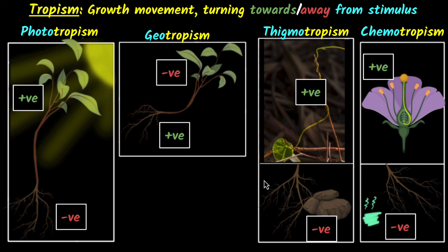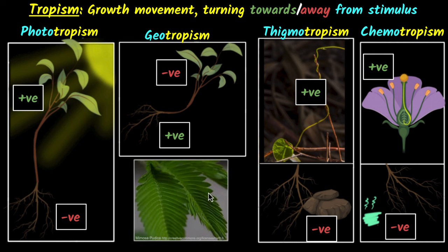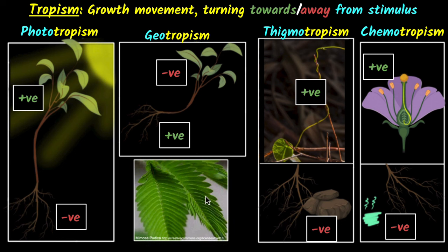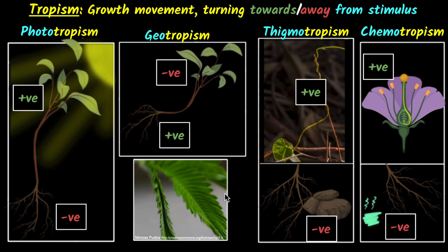All right, now I want you to look at this example, the example of mimosa leaves. When you touch the mimosa leaves, it closes. Can you pause and tell me which kind of tropism is this and whether it is a positive or a negative tropism? Why don't you pause and think about it?